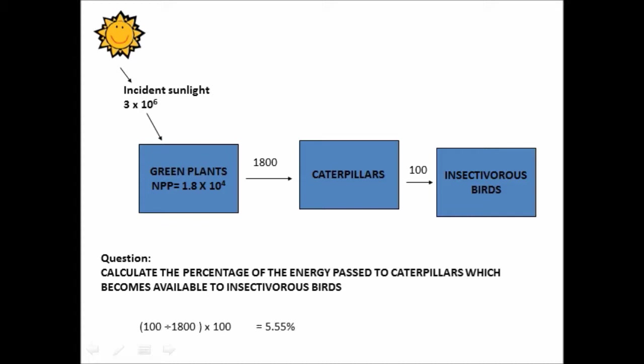Now, it becomes 100 divided by 1,800, multiply the answer by 100, 5.55%. So again, less than 10% gets passed from the caterpillars, the primary consumers, to the insectivorous birds, the secondary consumers.